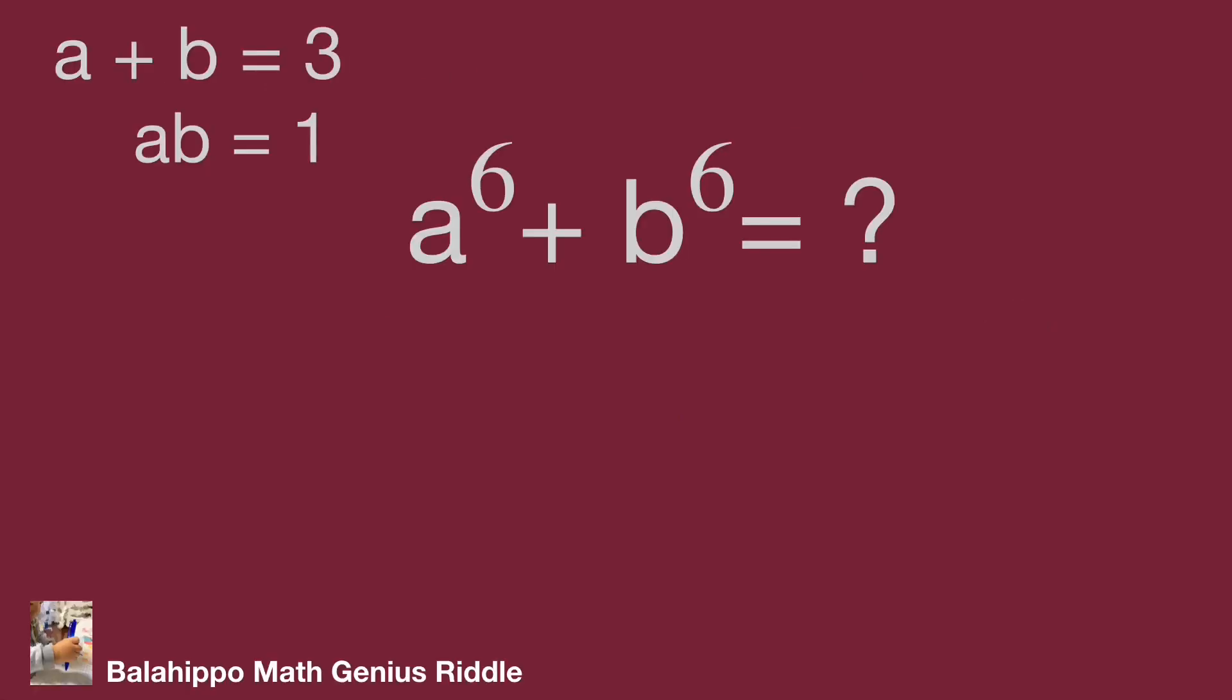We have the given equations a plus b equal to 3 and a times b equal to 1. How can we get the value for a power of 6 plus b power of 6?